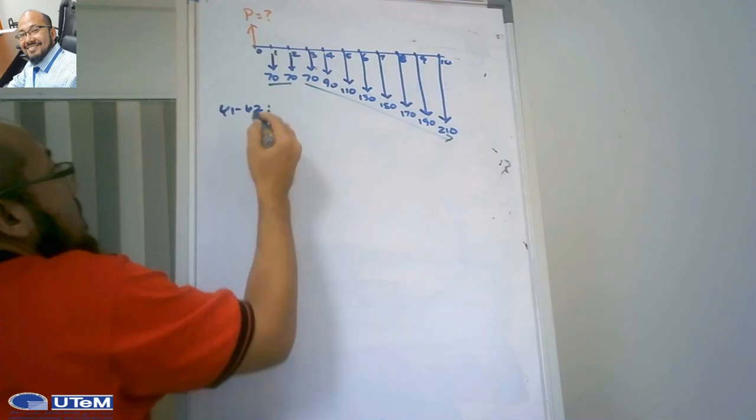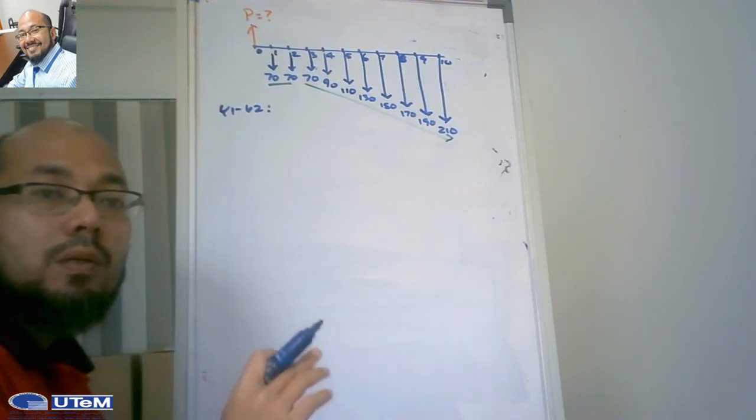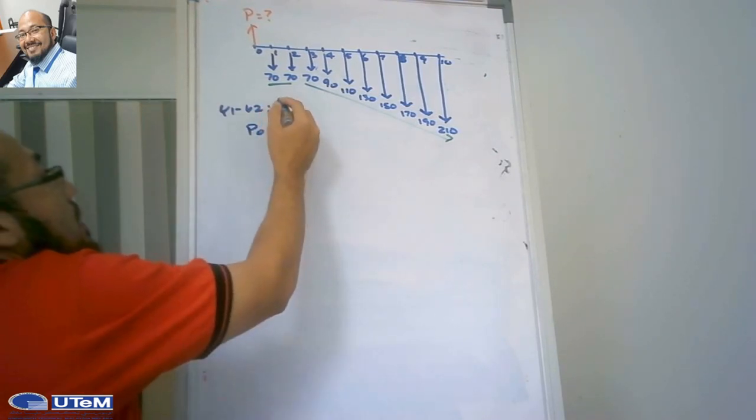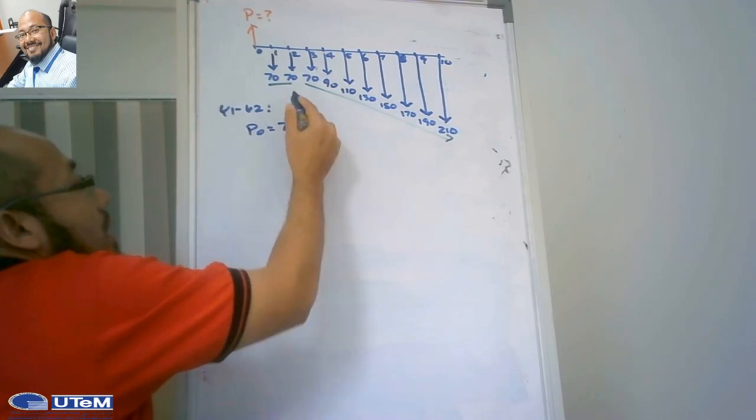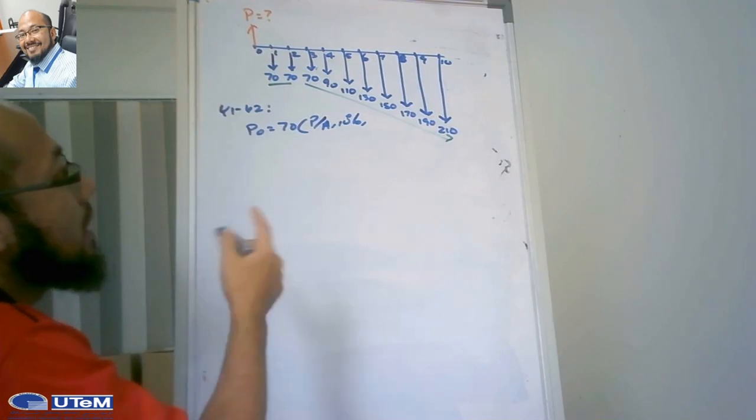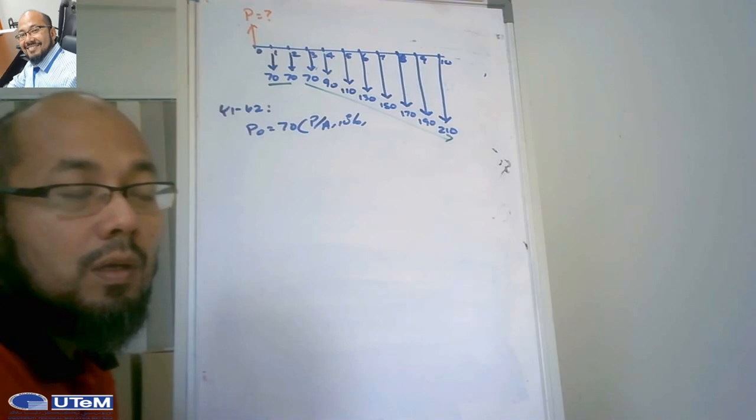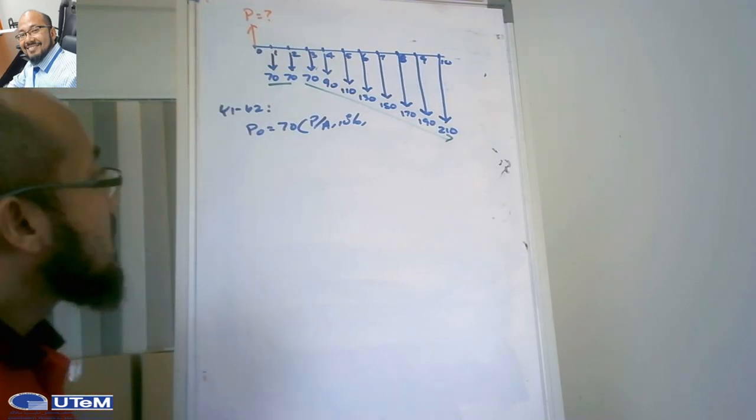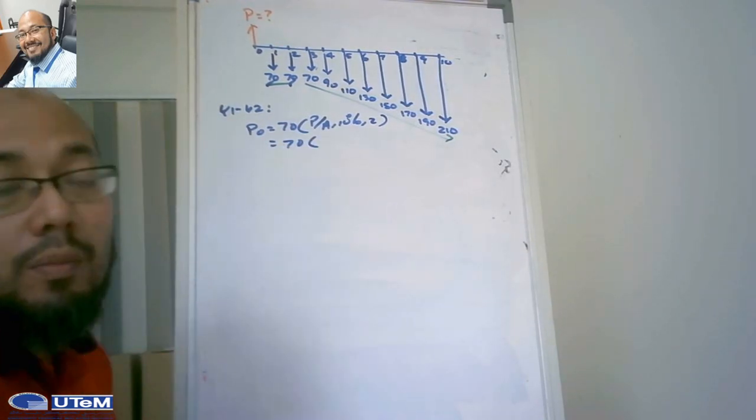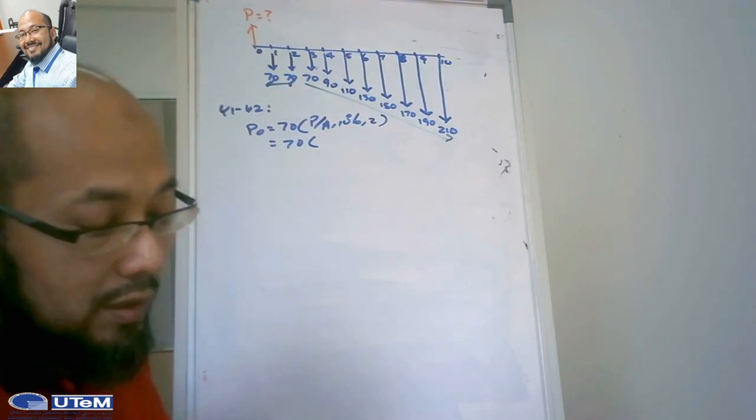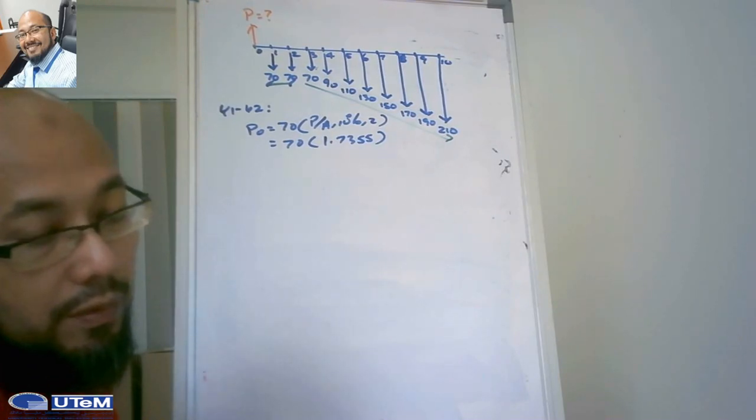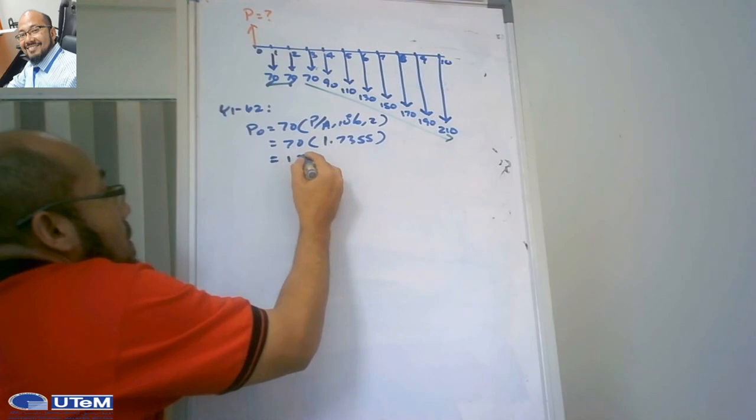So year 1 to year 2, we can transfer the 70 ringgit from year 1 and year 2 to year 0. So P0 equals 70 times the A factor. The N refers to how many A series in the cash flow diagram - in this case we have two 70 dollar payments, so N is 2. We can refer to P/A 10%, 2 inside the factor interest table, so 1.7355. This gives us 121.5.